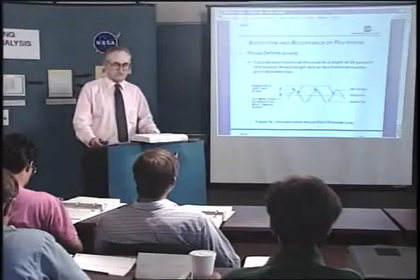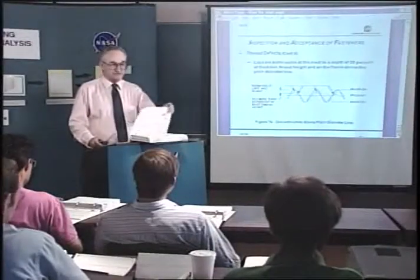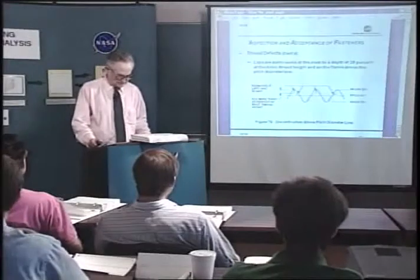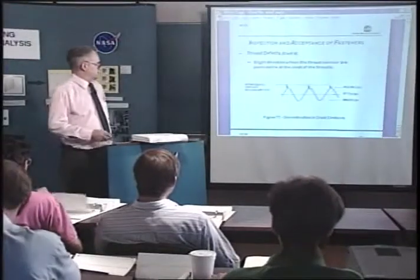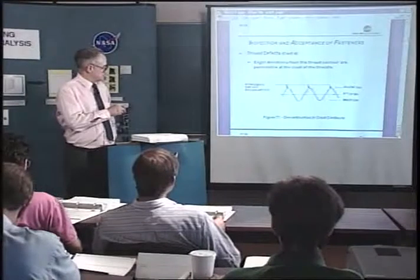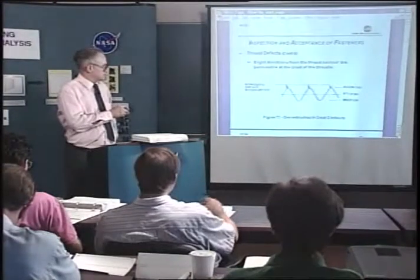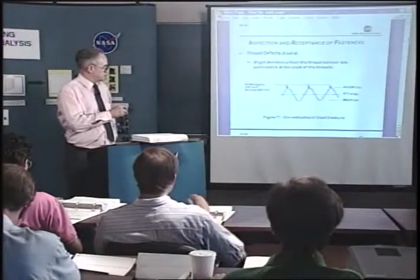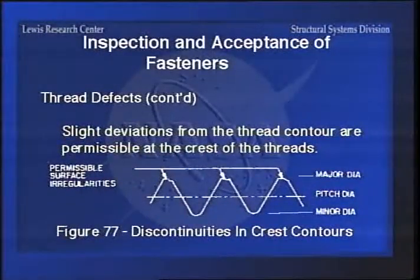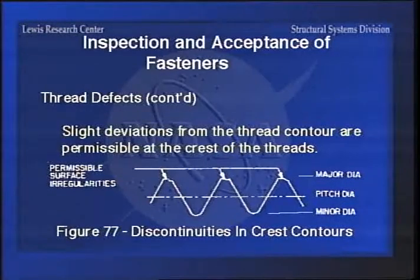If you find too many cracks in a fastener you really should reject it. Here's something that is a lesser problem - it just looks bad having little nicks or something like that. As long as it's not a crack but just a nick from handling, and it doesn't affect the functioning of the threads, you could probably accept a nick on the outside surface of the threads.